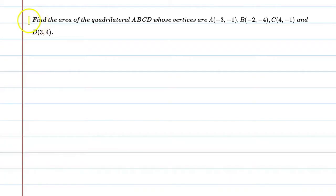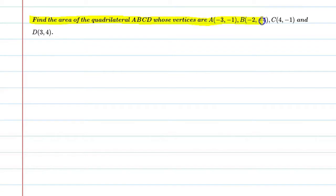Hello students, let's solve this question. Find the area of quadrilateral ABCD whose vertices are A(-3, -1), B(-2, -4), C(4, -1) and D(3, 4).